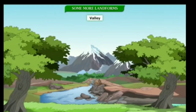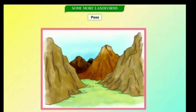Valleys are lowlands, normally found between hills or mountains. As rivers flow down plateaus or mountains, they carve out deep gorges and river valleys. The mountain ranges are sometimes so high that it is very difficult to cross them. There are narrow passages or gaps between the mountains, and these are called passes.